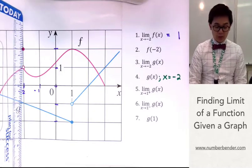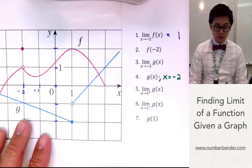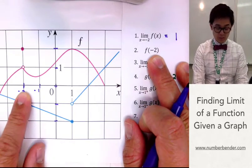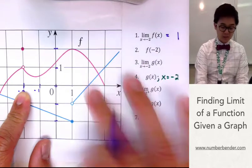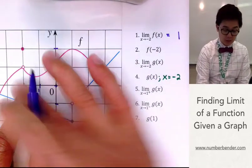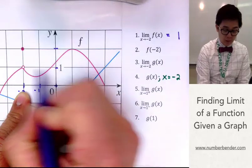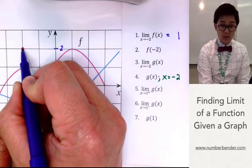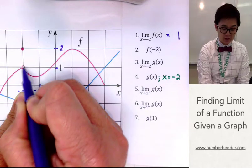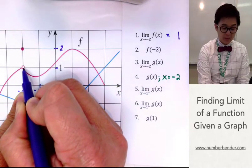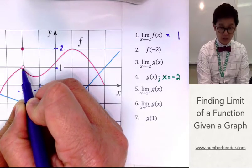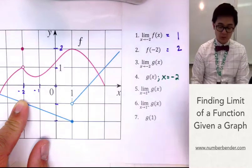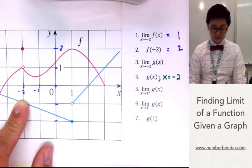For problem 2, we're looking for the exact value of y given x is equal to negative 2 for the pink function. We have two options — 1 and 2 — but we use the closed dot. The open circle means the value of y at x equal to negative 2 is undefined there, so we use the closed dot at y equal to 2. So the answer to number 2 is 2.